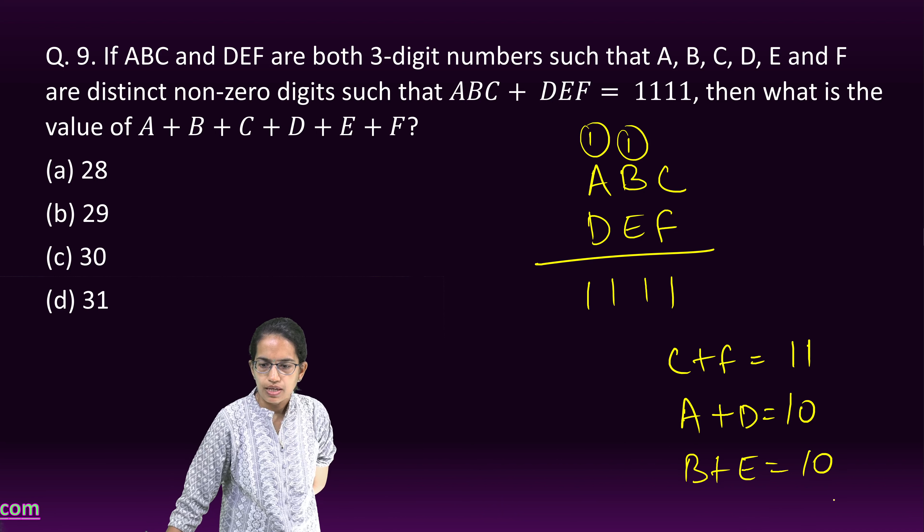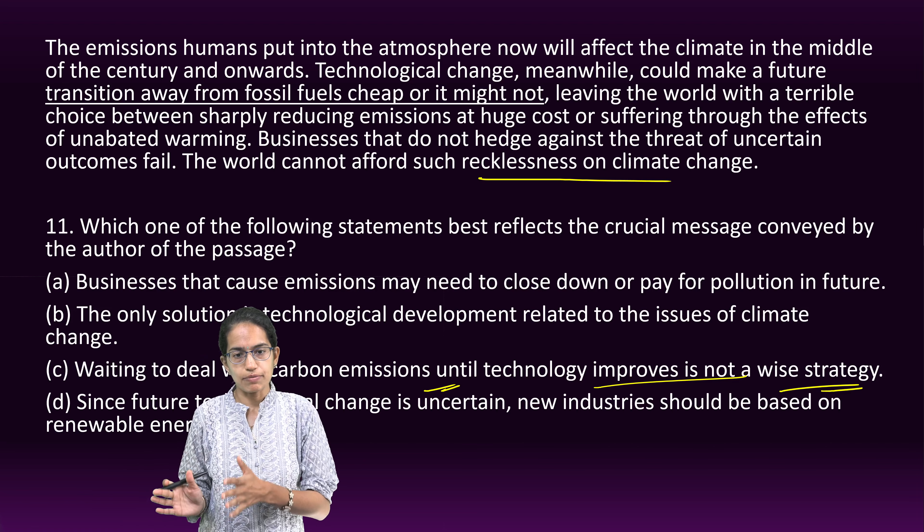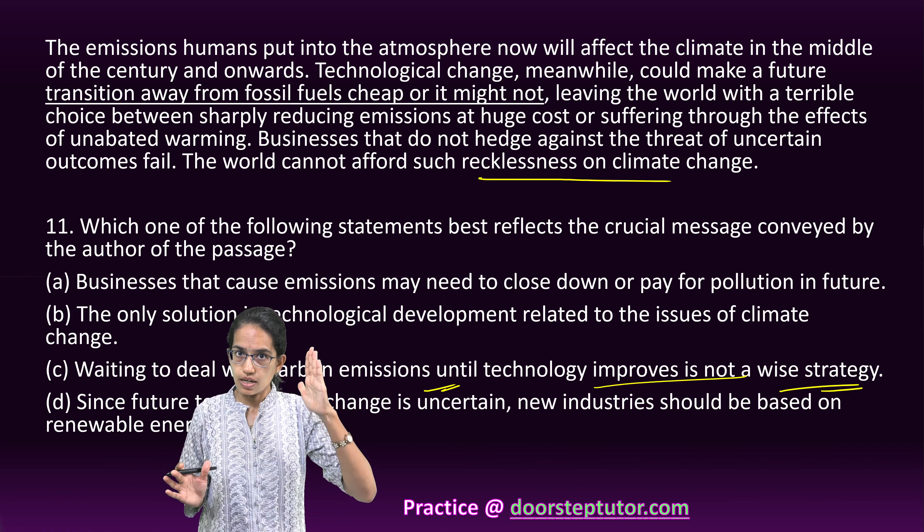You need not do calculations with each and every number — simple logic can solve this question. The next question: the emissions humans put into the atmosphere will not affect the climate in the middle of the century. But technology would always ensure a future transition away from fossil fuel, cheap or not, would have a terrible impact. This question is trying to say that waiting to deal with emissions until technology improves is not a wise strategy, because the world cannot afford the recklessness of climate change.